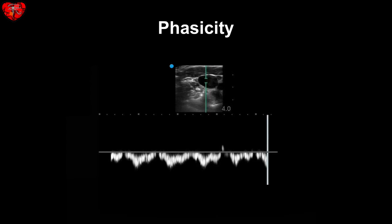Not only is venous velocity lower than that in arterial tracings, here you can see another typical Doppler signature for veins: phasicity. This is the undulating tracing that relates to the changes in intrathoracic pressure. This occurs with normal breathing and is typically seen in larger veins, such as the internal jugular vein, which is shown here.